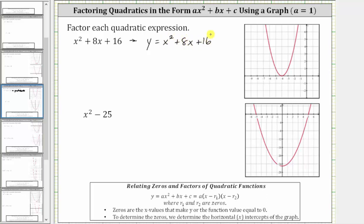Now looking at the graph, notice how we only have one horizontal intercept, which is this point here with the ordered pair negative four comma zero, but because the graph touches the horizontal axis and then bounces back, we call this a double zero.